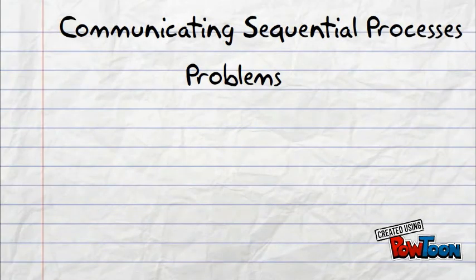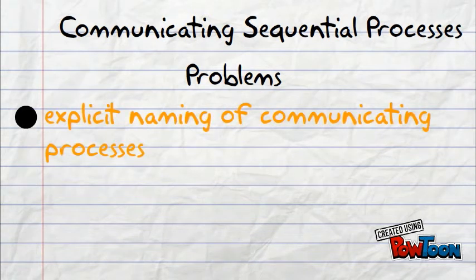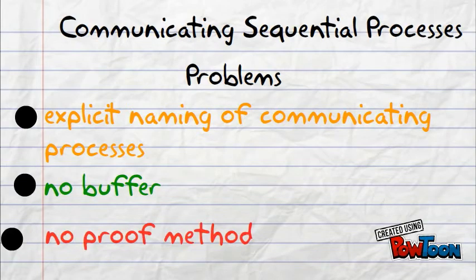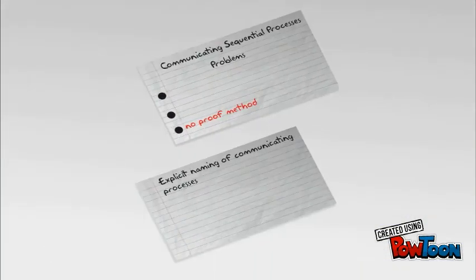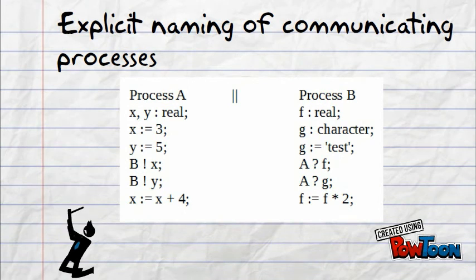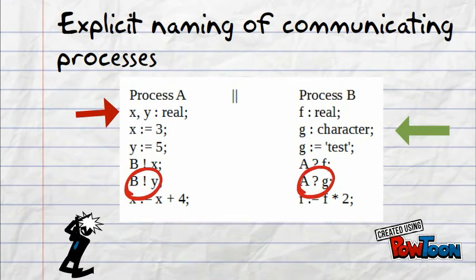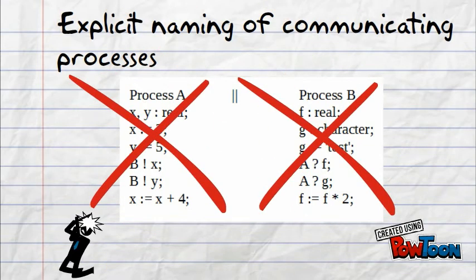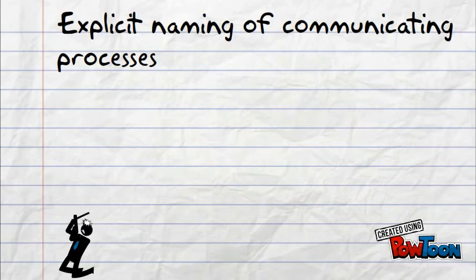There are three problems with CSP I'd like to cover in this video: explicit naming of communicating processes, absence of buffer, and absence of any proof method. Explicit naming of concurrent processes is just complicated. For example, a minor mistake such as passing value types that do not correspond to each other leads to crash of both processes. Also, if output process refers to terminated process, it is going to terminate too.